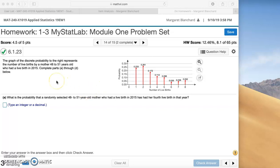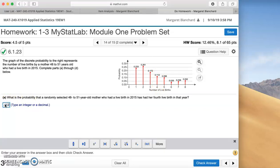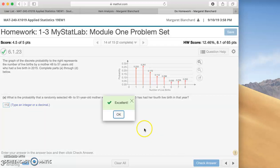What is the probability that a randomly selected 48 to 51 year old mother who had a live birth in 2015 has had her fourth live birth in that year? We would go to four, number of live births four, and then look at the probability, 0.112. Let's type that in, check answer. Excellent.